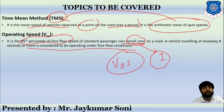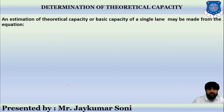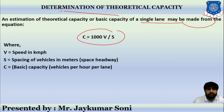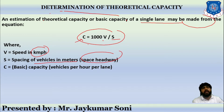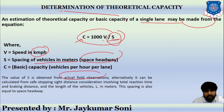Now let us discuss the determination of theoretical capacity for a particular highway. The theoretical capacity, also sometimes called basic capacity of a single lane, may be estimated from the equation: C = 1000V / S, where V is speed in km/h, S is the spacing of vehicles in meters (space headway), and C is the basic capacity in vehicles per hour per lane. The value of S is obtained from actual field observations.